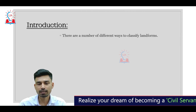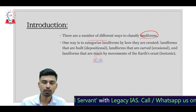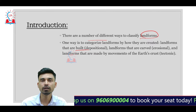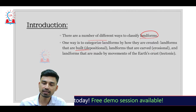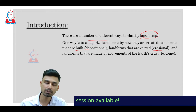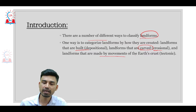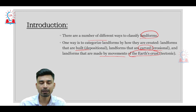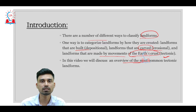As far as the landforms on the earth's surface are concerned, there are a number of different ways in which we can classify them. One major way is depositional landforms — landforms that develop due to depositional work of sediments brought by rivers, winds, or glaciers. Another way is erosional landforms, carved out by agents of erosion such as wind, water, and air. Landforms made by the movement of the earth's crust or plates can be categorized as tectonic landforms, and in this video we discuss an overview of the most common ones found across the earth.